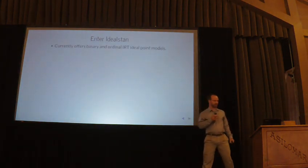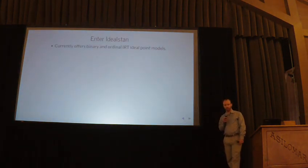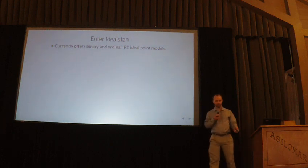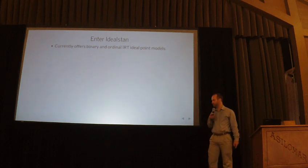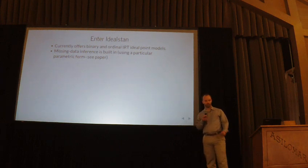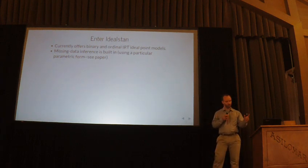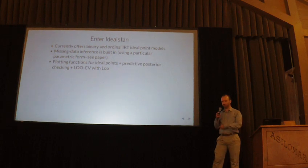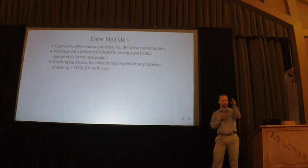Thank you, Batman. So that's what Idealstan does. Currently it implements ideal point models for binary and ordinal outcomes. It's really easy to add different distributed variables because in Stan that's really easy. It also comes with missing data inference built in — that's my own project, adding missing data to ideal point models in a certain parametric form you can read about in the paper. It also comes with a lot of plotting functions so you can see the ideal point distributions.